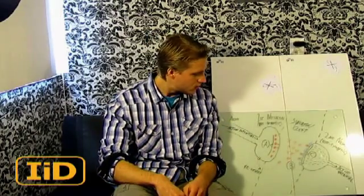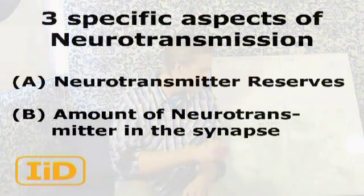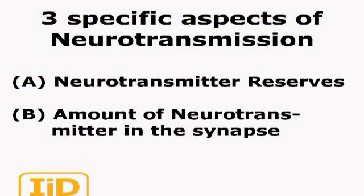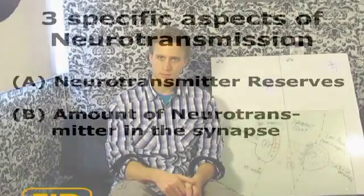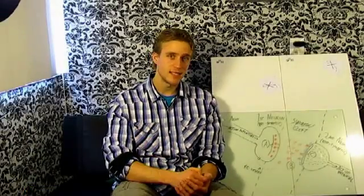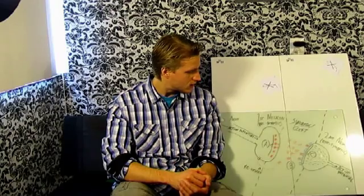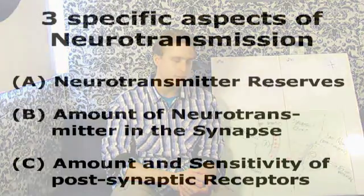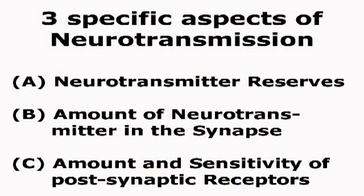Second, B, is simply the amount of neurotransmitter that is being released into the cleft at any given time. And finally, C refers to the sensitivity and the amount of receptors that are present at the second neuron.